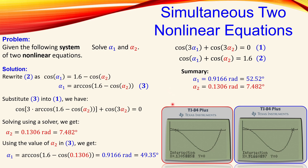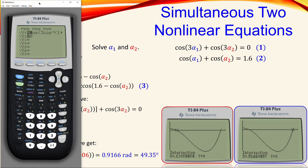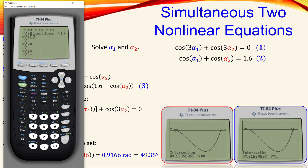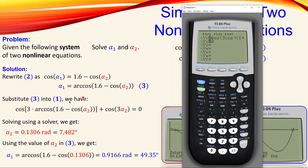Here is the display of the Texas Instruments calculator. The expression entered for Y1 is the left side of the substituted equation — cosine of the full arccos expression, plus cosine of 3α₂. You can see that it includes the arccos of 1.6 minus cosine of the argument, and the final term cosine of 3x, where x represents α₂. Y2 is set to zero, the right-hand side.